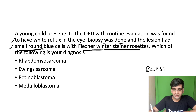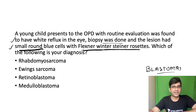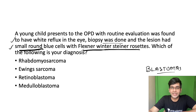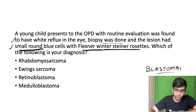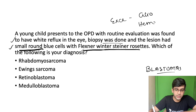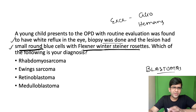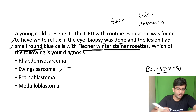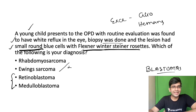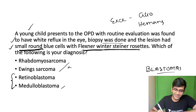Most blastomas are small round blue cell tumors, with exceptions: glioblastoma and hemangioblastoma do not have small round blue cell tumors. Almost every other blastoma will. Given that this is a young child with an eye lesion, I have two possibilities — medulloblastoma is unlikely in the eye, so the answer is retinoblastoma.